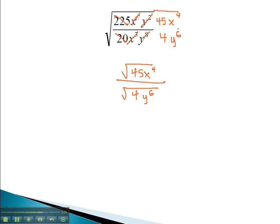Finding the prime factorizations of our numbers, 45 is 3 squared times 5, with x to the 4th. And in the denominator, 4 is 2 squared times y to the 6th.